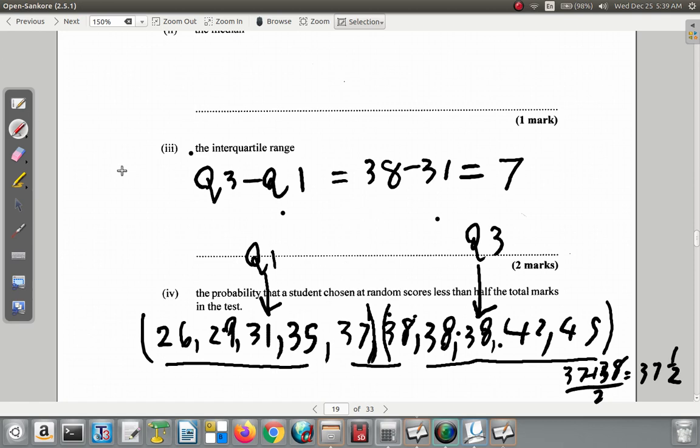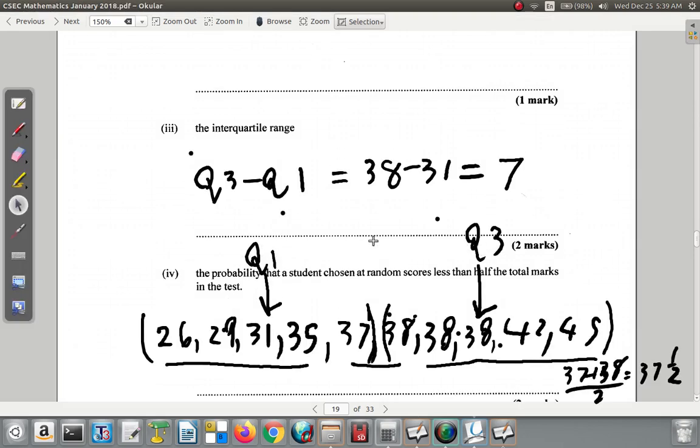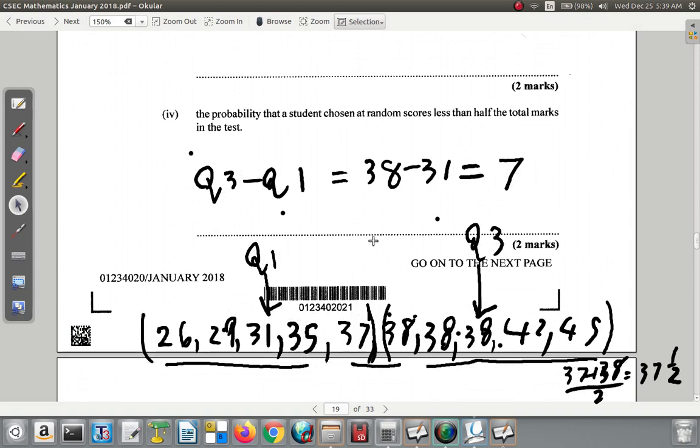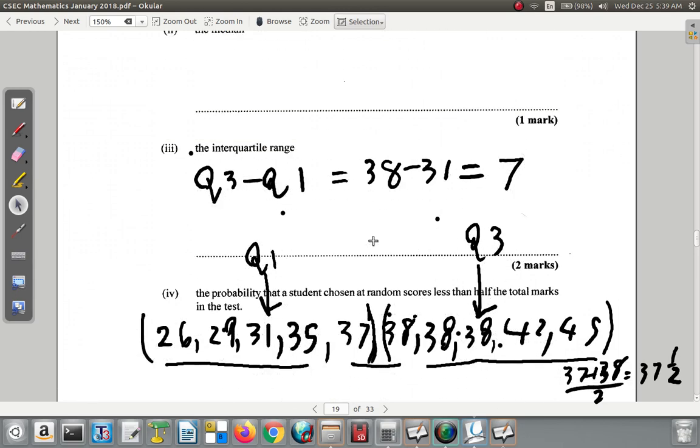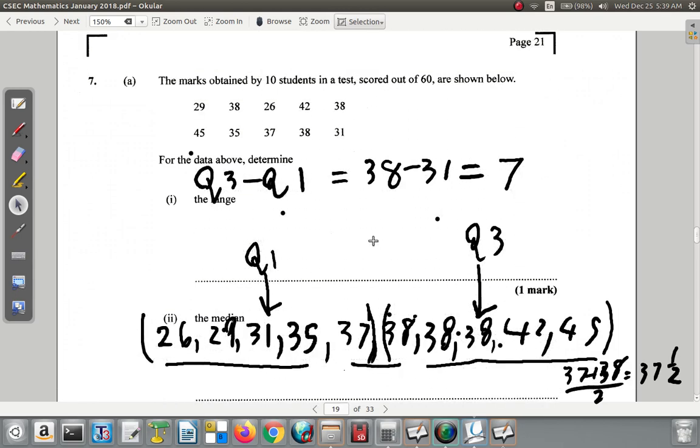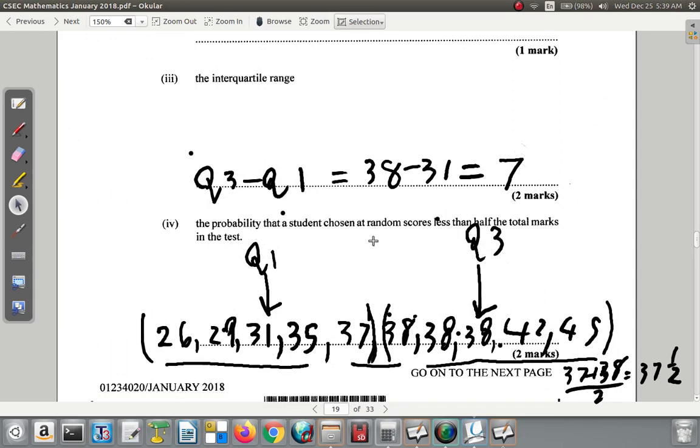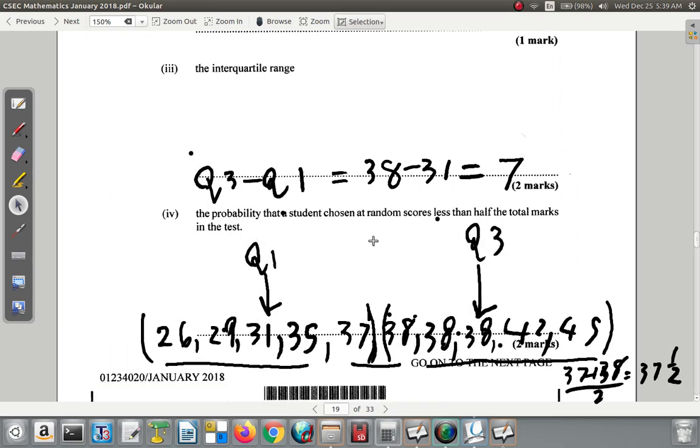Then after that, what do they ask for? The probability that a student chosen at random scores less than half of the total marks in the test. The total marks available is 60.